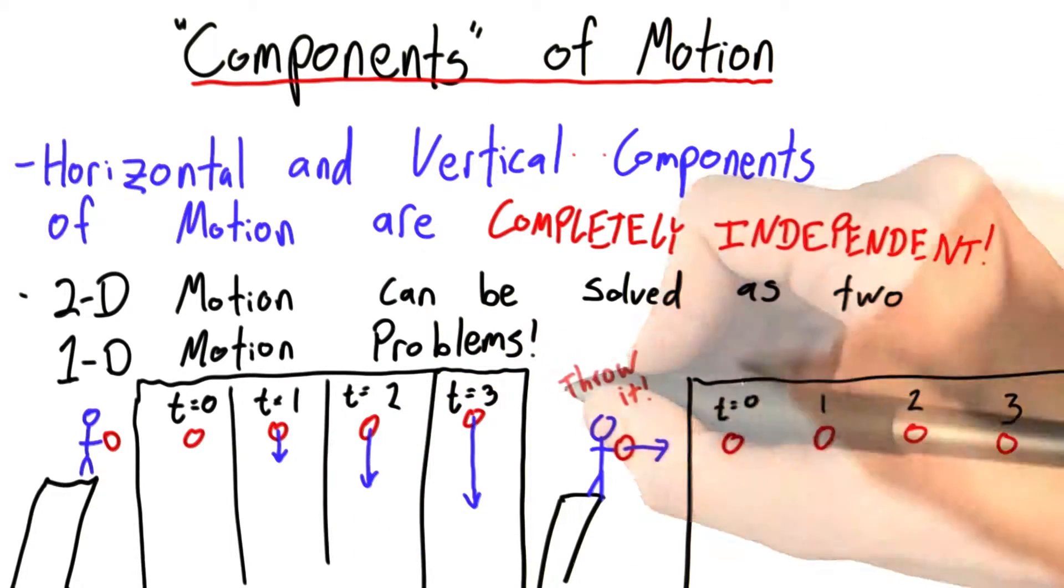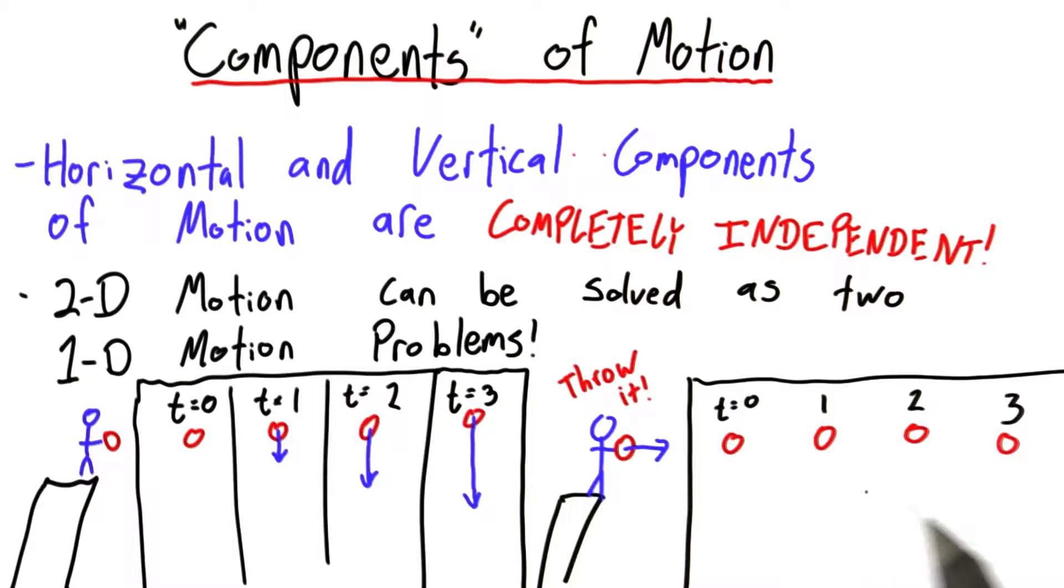Now what if instead of dropping the ball, we throw it to the side? What kind of arrows are we going to draw now? The instant the ball is released, it only has horizontal velocity from you throwing it.